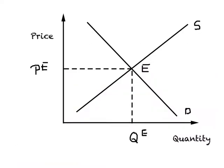Let us use the diagram we have used so many times in the past. We have a demand curve which is downward sloping, and a supply curve which is upward sloping. Wherever these two intersect, we have equilibrium. The price charged by the market is PE, price at equilibrium, and the quantity traded is QE at equilibrium. For some reason, the government believes that the price charged by the market is too high for a certain section of the society. In such a case, the government steps in and sets a price ceiling.